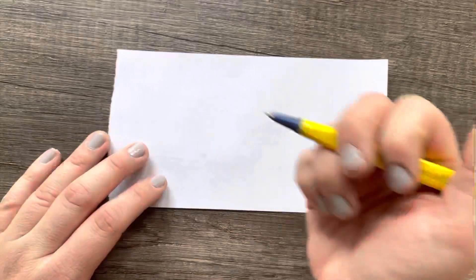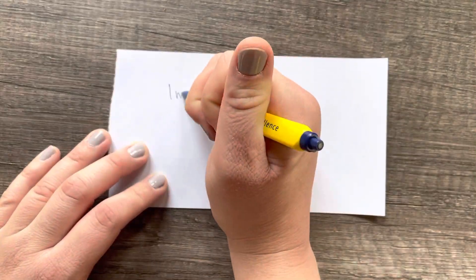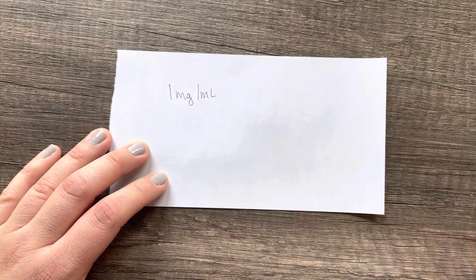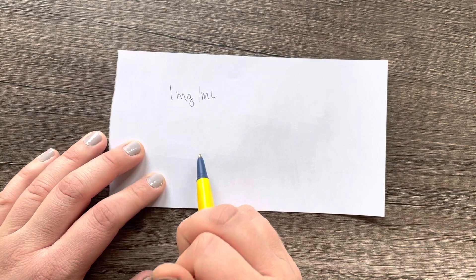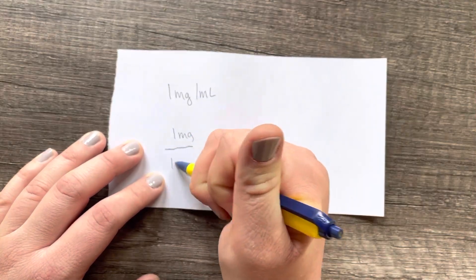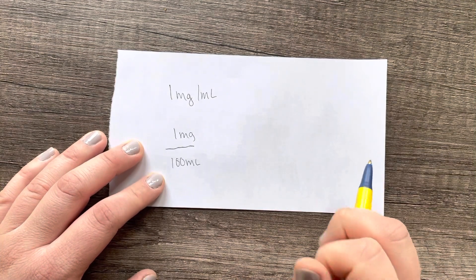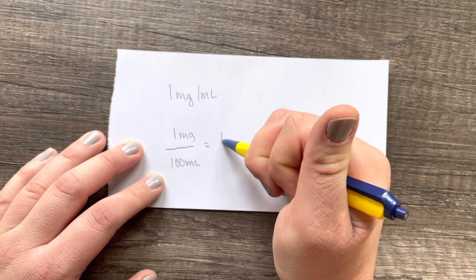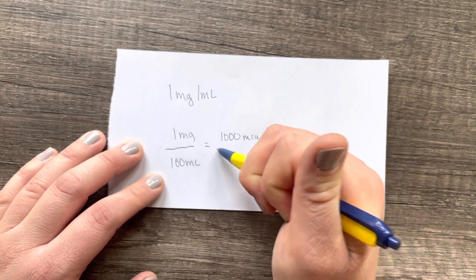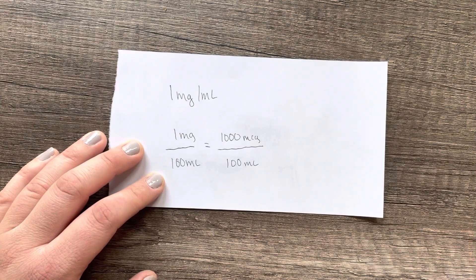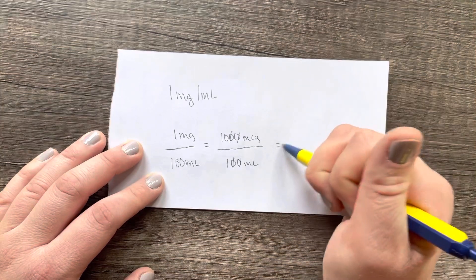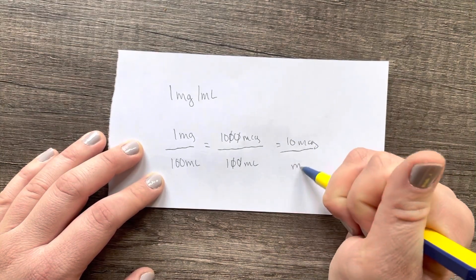Just to show you the math behind that — my epinephrine comes as one milligram per ml. I want to yield 10 micrograms per ml, so I'm going to put one milligram into 100 mls. If we change that to micrograms, because my desired dose is in micrograms, one milligram equals 1000 micrograms in 100 mls, and if I reduce that I do get a concentration of 10 micrograms per ml.